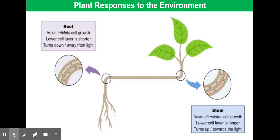In the roots, you can make out in the zoomed-in circle image lots of little red dots on the underside — those red dots represent auxin, and in the roots auxin inhibits cell growth. As a result, the cells in that lower layer get shorter relative to the cells on the top layer, which continue to grow normally. This causes a turning down, away from light, because auxin diffuses away from light. In roots, we therefore see negative phototropism.